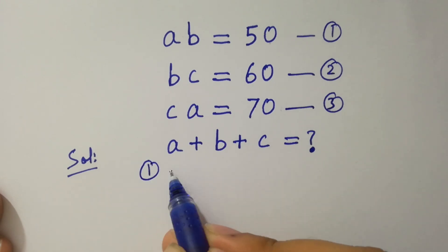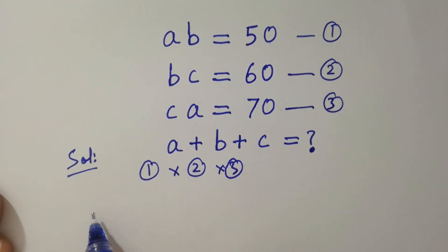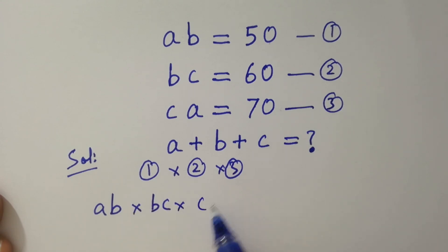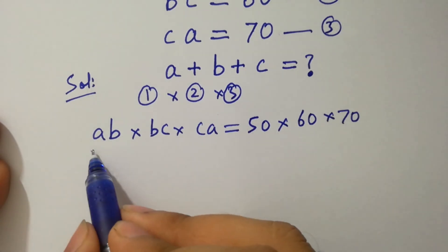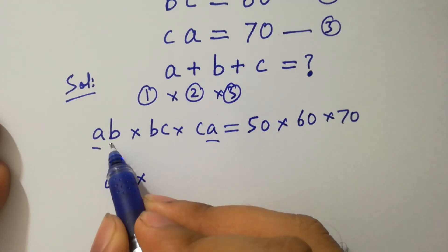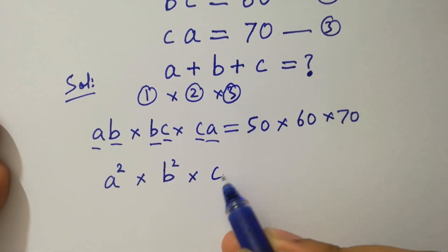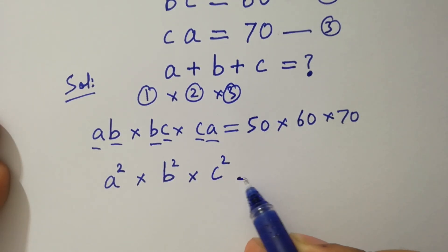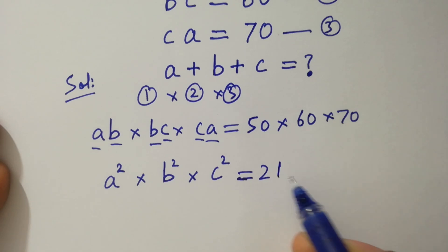Multiply these equations. We have ab times bc times ca equals 50 times 60 times 70. Grouping the variables: a times a is a squared, b times b is b squared, c times c is c squared. So a squared times b squared times c squared equals 50 times 60 times 70, which is 210,000.